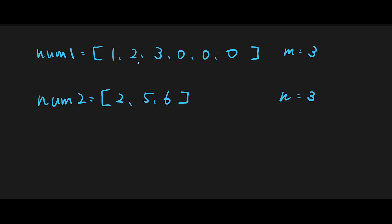nums1 is sorted in non-decreasing order, and nums2 also. So the last number is the biggest number in each array. That's why we compare numbers from the end — 3 versus 6. Let's define m_index, n_index, and a right_index, which is the position where we should place the next biggest number. Comparing 3 with 6: 6 is greater than 3, so 6 goes to the last index.